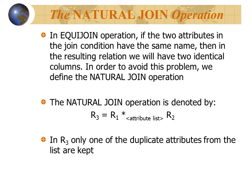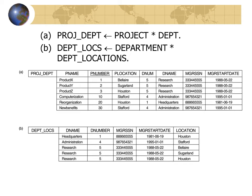To overcome this duplication problem, we use natural join operations. In an equi-join, if two attributes in the join condition have the same name, the resulting relation will have two identical columns containing the same values. To avoid this problem, we define the natural join operation, denoted by the asterisk symbol. In natural join, attributes from R1 and R2 are matched, and only the common attribute names appear once in the result R3 — eliminating any replications.